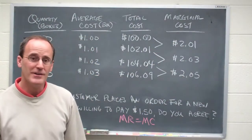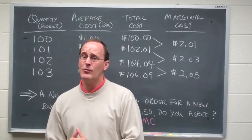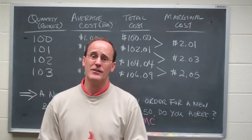Your customer is offering you a dollar fifty. A dollar fifty is less than 201 in this case. You'd be 51 cents worse off if you actually took their offer.